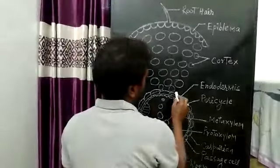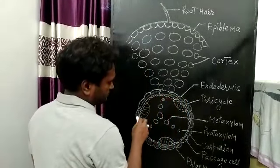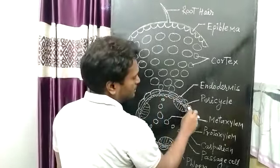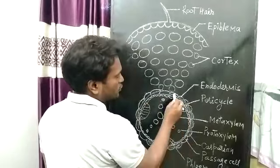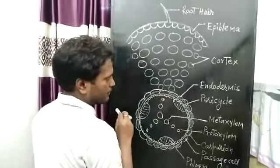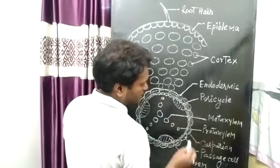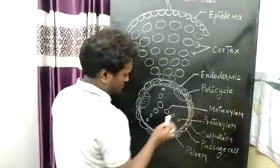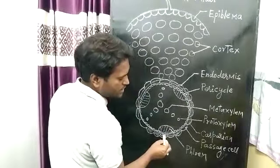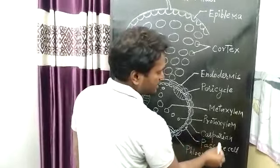Further, this layer is known as Endodermis, also known as the innermost layer of the Cortex. Endodermal cells are barrel-shaped and made of parenchyma cells. These cells have deposition of Lignin and Suberin — mainly the deposition is of Suberin. This deposition is known as the Casparian Strip.